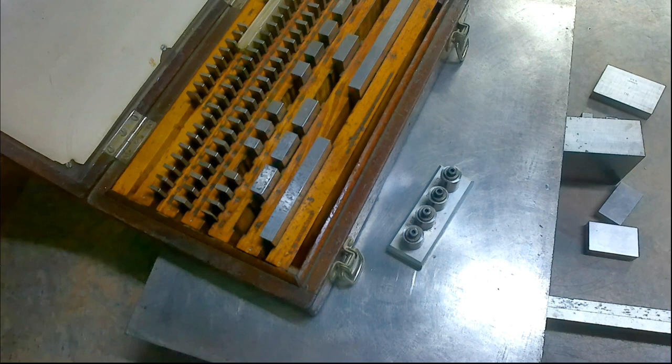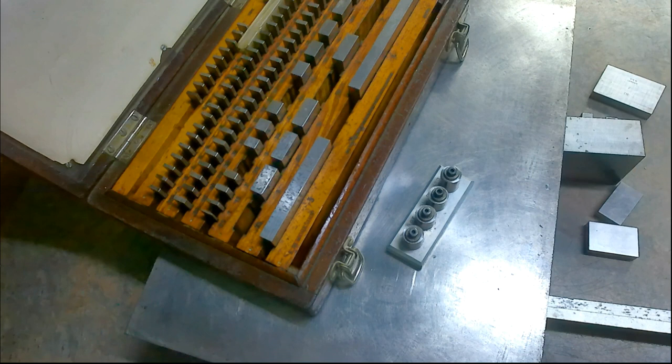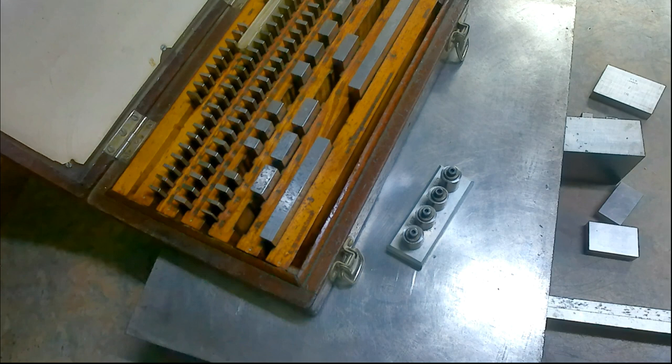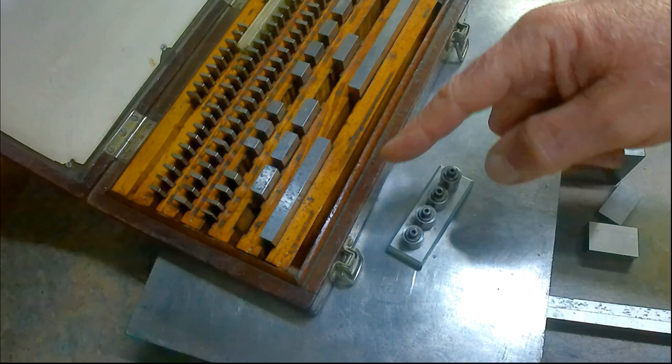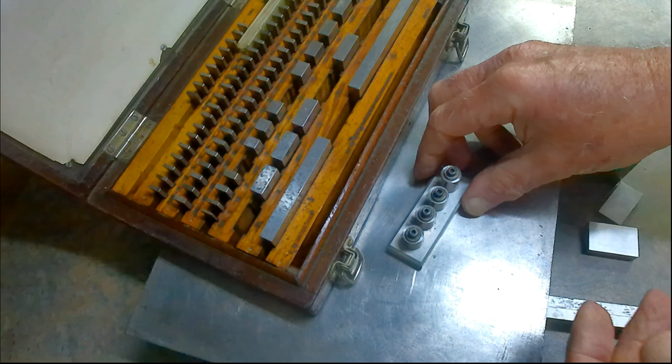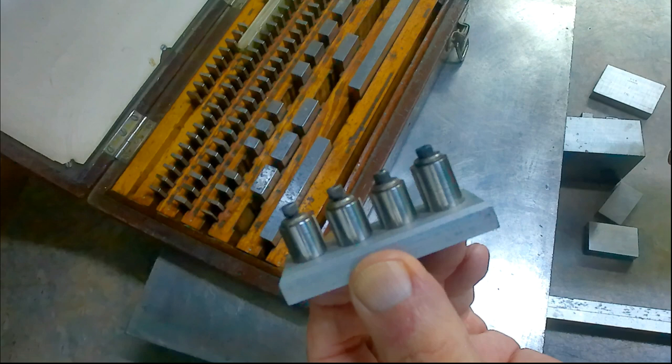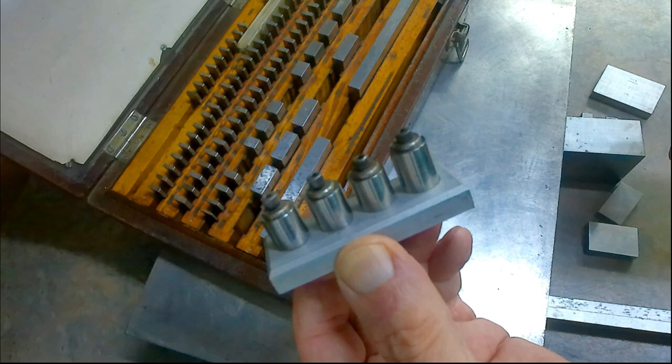What you're seeing here is my surface plate and a box of Imperial joe blocks or slip gauges. It is a complete set - the odd spaces is because I've already got the slips out. This is what I'm referring to when I speak of tool makers' buttons - it's a set of four with the appropriate screws.